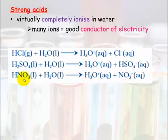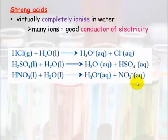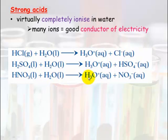Looking at nitric acid HNO₃, the conjugate base is NO₃⁻. All conjugate bases are the acid minus the hydrogen. Here, water is acting as the base and has gained the hydrogen, forming hydronium. So hydronium is the conjugate acid of water.